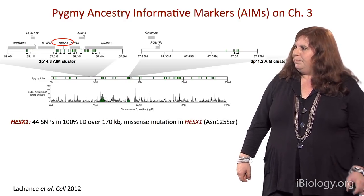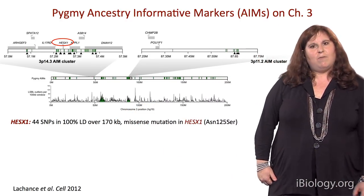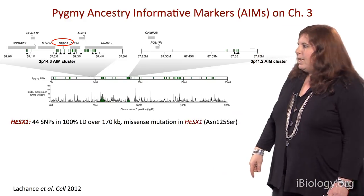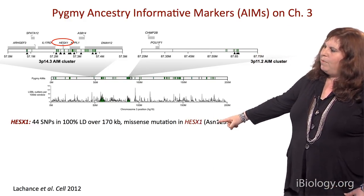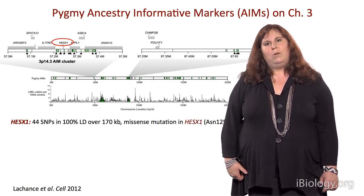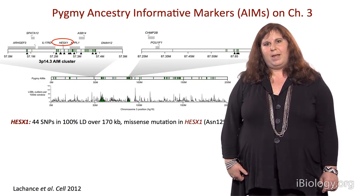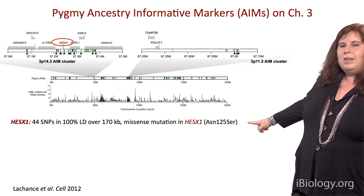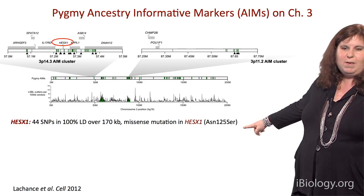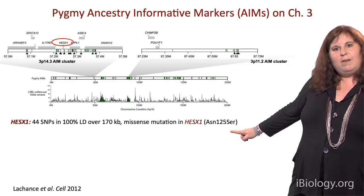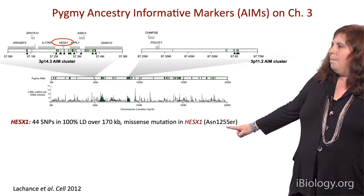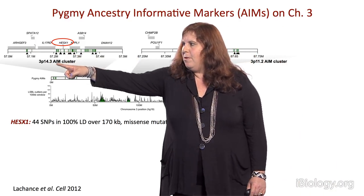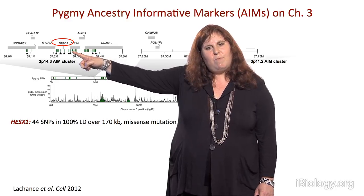This cluster consisted of 44 SNPs in 100% association with each other over 170,000 nucleotides, and it contained a very interesting candidate gene called HESX1. HESX1 codes for a transcription factor that plays a very important role in regulating the development of the anterior pituitary in the brain — the site of production of growth hormone as well as other reproductive hormones. Interestingly, we identified a non-synonymous amino acid change in this gene that had been previously associated with idiopathic short stature in humans. However, this variant is present at about 20% frequency in other Africans, so we hypothesize that something in this region may be altering gene expression of HESX1 or other genes.